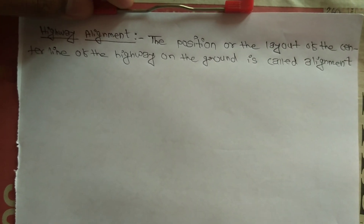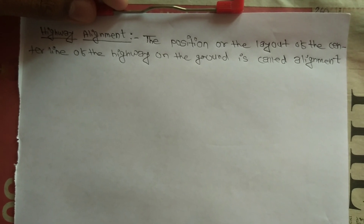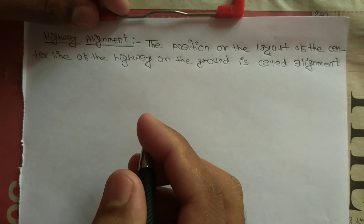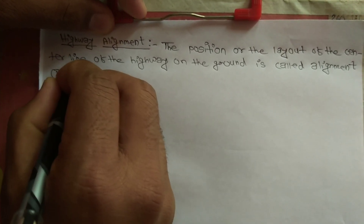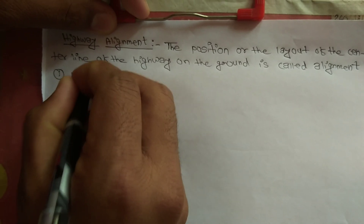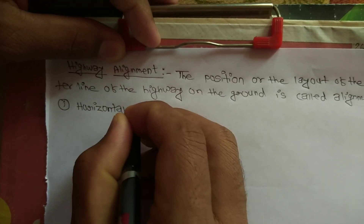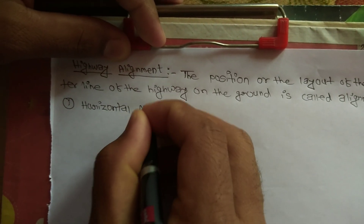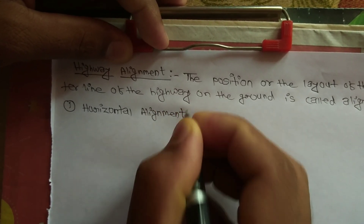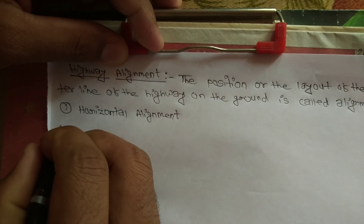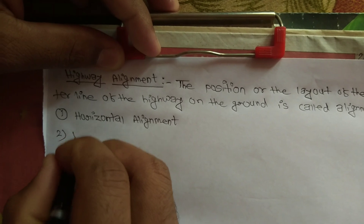So there are two types of alignment: horizontal alignment and vertical alignment. The first one is horizontal alignment and the next one is vertical alignment.